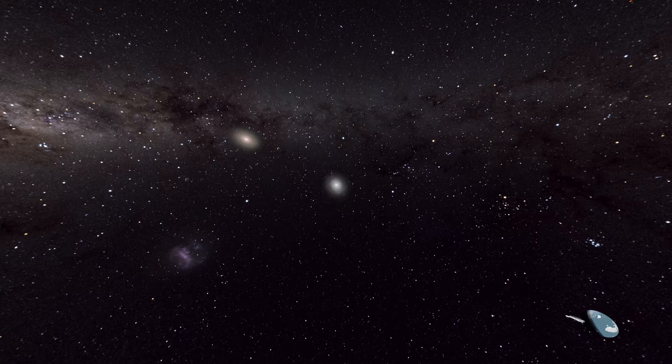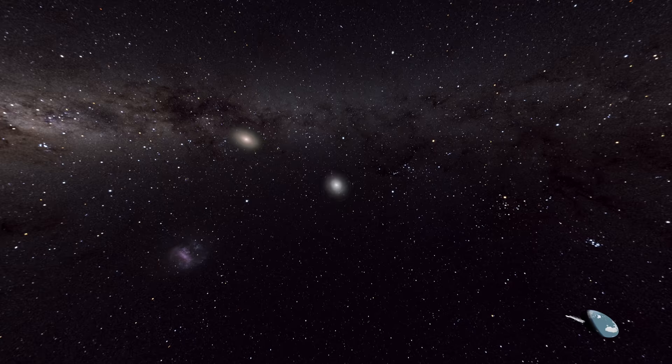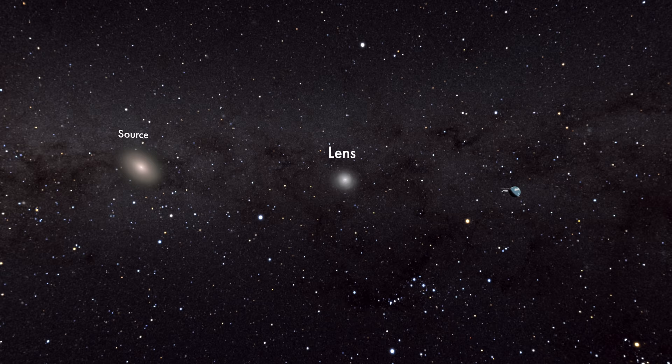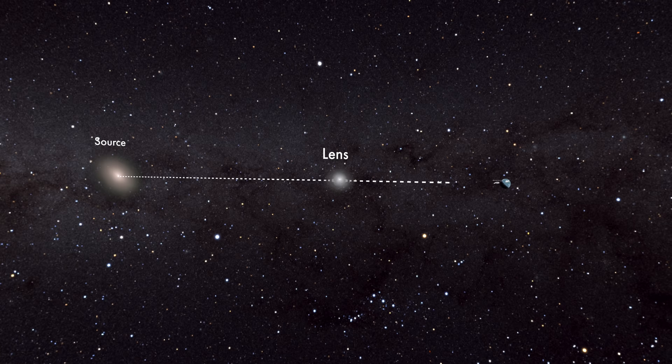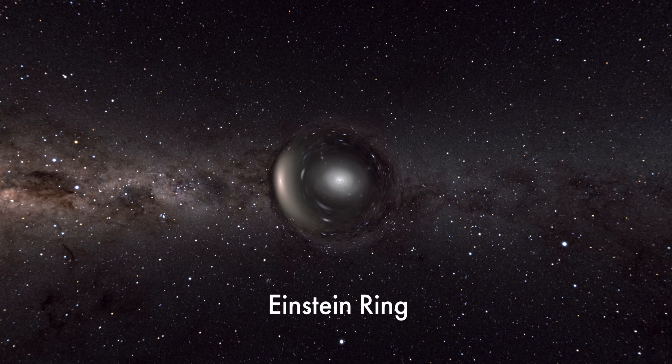In gravitational lensing, there are three essential components: the source, the lens, and the telescope. If the lens and the source are spherically symmetric, and if the source lens and telescope are perfectly aligned, you get what's known as an Einstein ring.